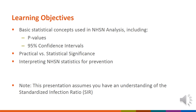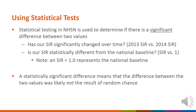This presentation assumes you have a basic understanding of the SIR and its calculation. Statistical testing in NHSN is used to determine if there is a significant difference between two values. Remember that an SIR of 1.0 represents the national baseline.